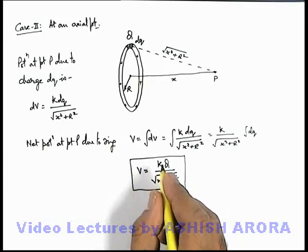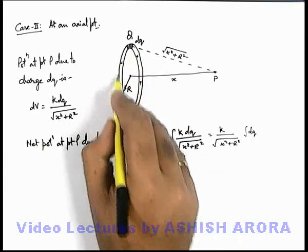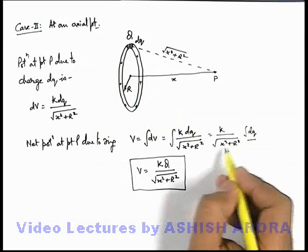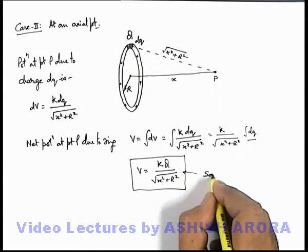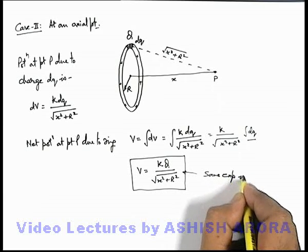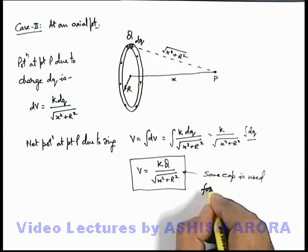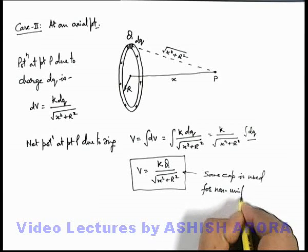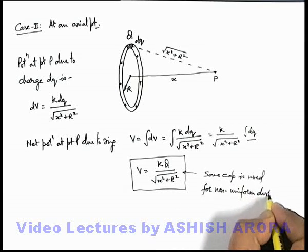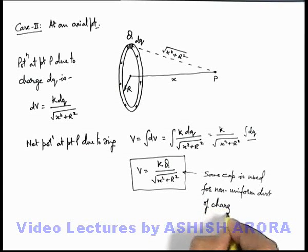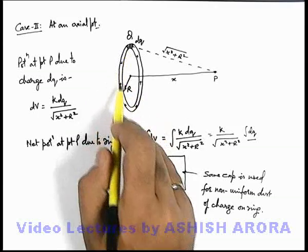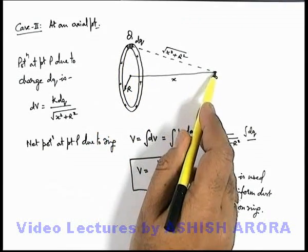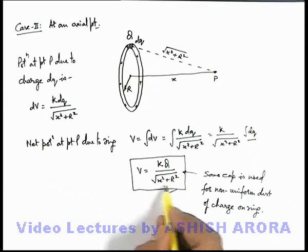Here also, even if the charge is non-uniformly distributed on the ring, we still need to integrate only dq because all elements of the ring are located at the same distance from point P. So the same expression V = kq / √(x² + r²) is used for non-uniform distribution of charge on the ring as well. You can use the same result even if the distribution of charge is non-uniform, because all elements of the ring will be located at the same distance — it will simply be kq divided by the distance of point P from all the elements.